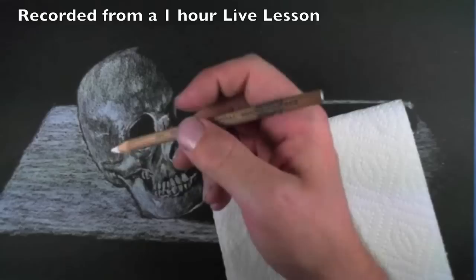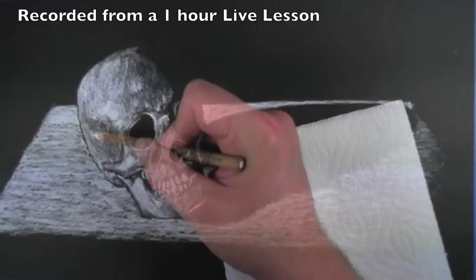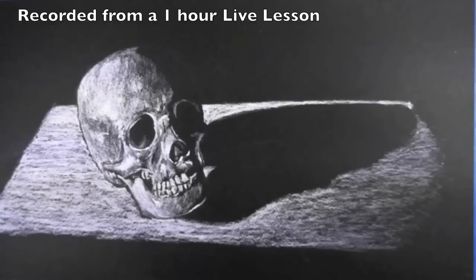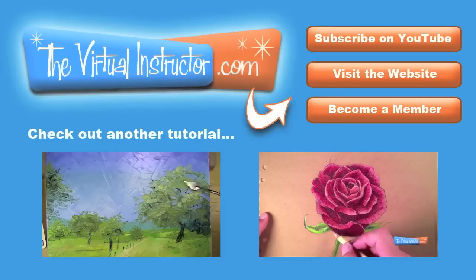A little bit on the cheekbone here. I'm just looking at the reference and finding any area. When you're working with the white charcoal on the black paper, any white medium on a black surface, you have to think in reverse because you're adding the highlights instead of the shadows, which is what we're usually accustomed to doing.